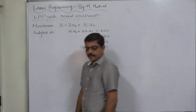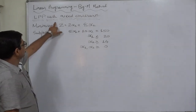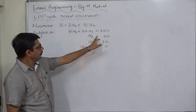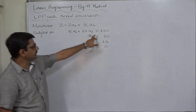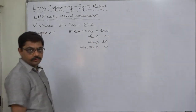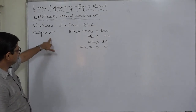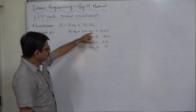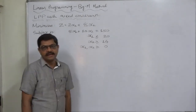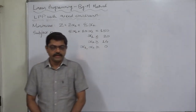Hello and welcome. We are going to solve a linear programming problem by the Big M method — an LPP with mixed constraints, meaning the constraints have all three possible signs: the first constraint has an equals-to sign, the second has less-than-or-equal-to, and the third has greater-than-or-equal-to. The problem is: minimize z = 2x1 + 8x2, subject to 5x1 + 10x2 = 150, x1 ≤ 20, and x2 ≥ 14, with x1, x2 ≥ 0.